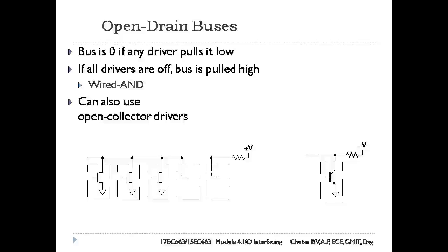This kind of bus is called a wired-AND bus, since the bus signal is only 1 if all driver outputs are 1; if any driver outputs 0, the bus signal goes to 0. The AND function arises from the wiring together of the transistor drains. Drivers can use bipolar transistors instead of MOSFET transistors, where the collector terminal is connected to the bus signal. Such a driver is called an open-collector driver.